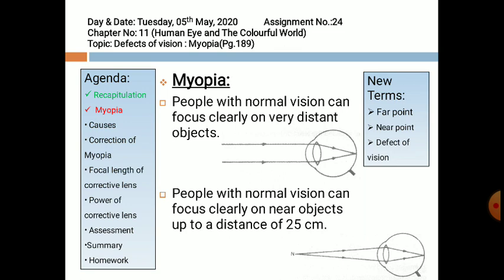Now coming to today's topic, myopia. This topic has three new terms: far point, near point, and defect of vision. Far point: the farthest distance from the eyes so that the sharp image of the object is formed on the retina without any strain — that is the far point. Near point: the minimum distance of an object from the eyes at which a sharp and clear image is formed on the retina without any strain. This is known as the near point of an eye. Normally it is 25 cm for a normal human being.